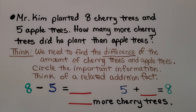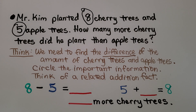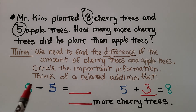Mr. Kim planted 8 cherry trees and 5 apple trees. How many more cherry trees did he plant than apple trees? We need to find the difference — and difference means subtraction. We circle the important information: 8 cherry trees and 5 apple trees. We can think of a related addition fact to solve 8 minus 5. We think: 5 plus some number equals 8. Starting at 5 and counting on — 5, 6, 7, 8 — that's 3. So 5 plus 3 is equal to 8, and using this related addition fact, 8 minus 5 is equal to 3. Mr. Kim planted 3 more cherry trees than apple trees.